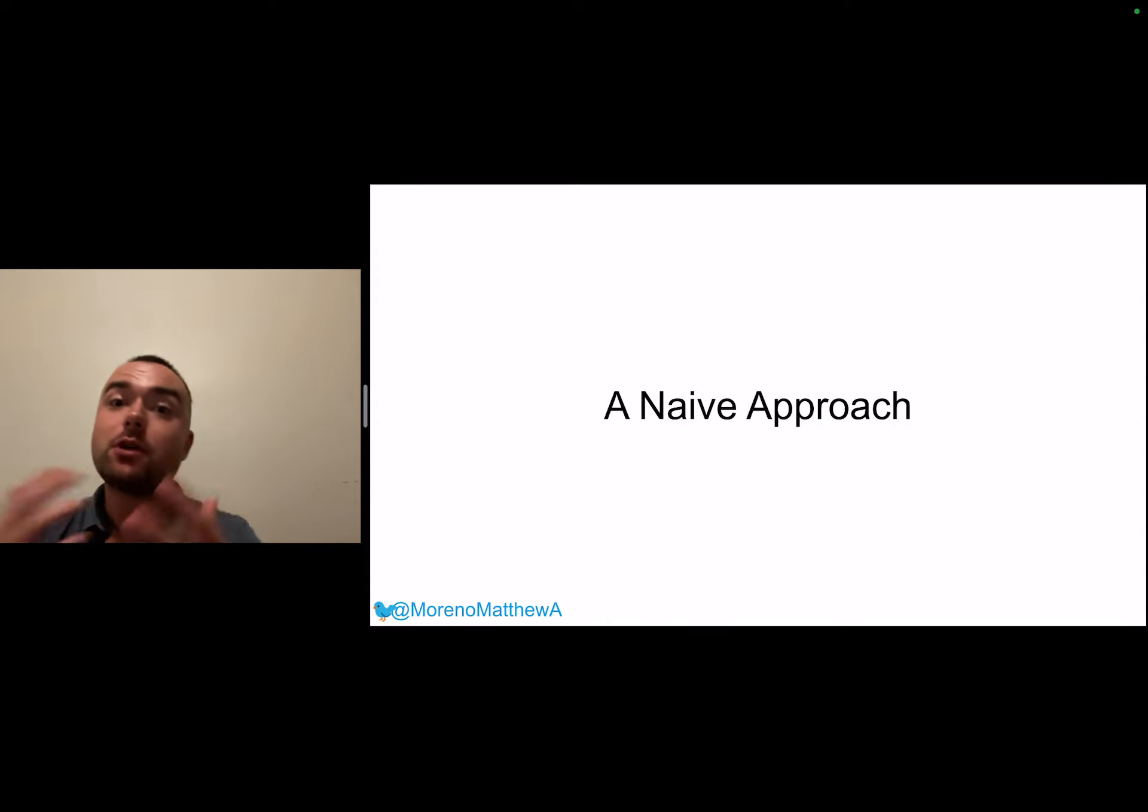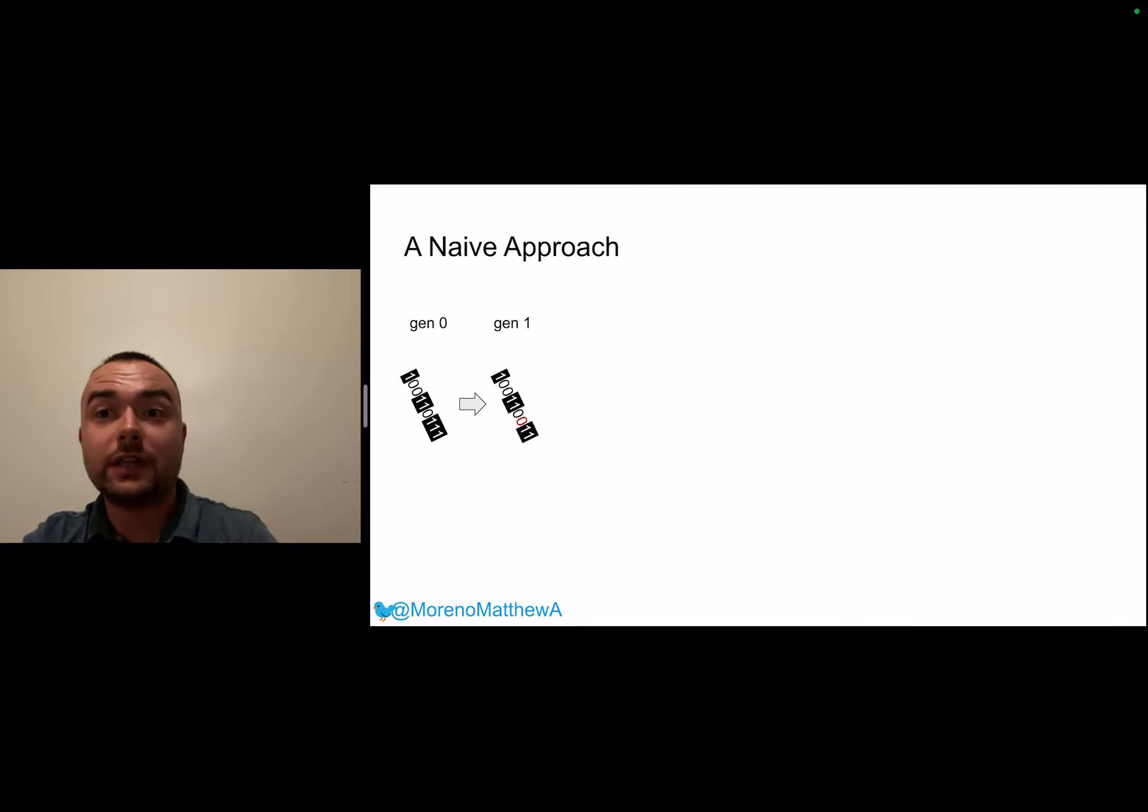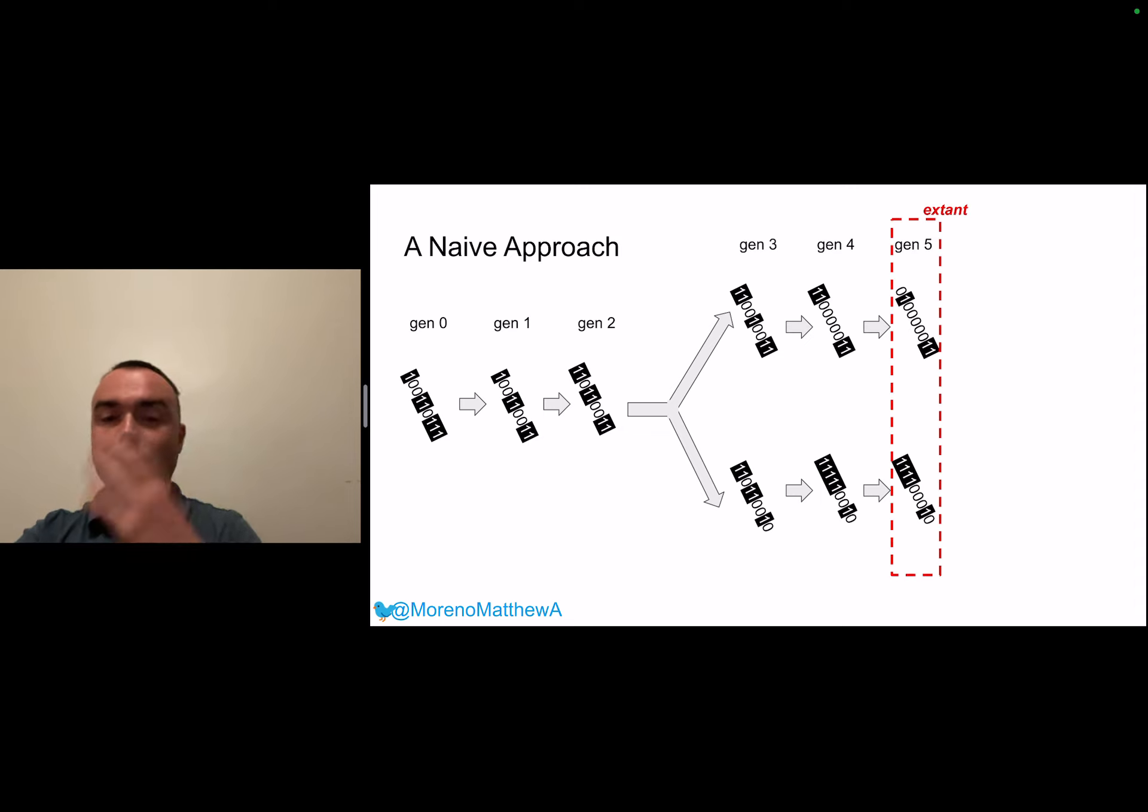To prime our thinking I'm going to start by sharing a naive approach we might think to solve this problem. We could imagine having a simple bit string genome that's just a set of ones and zeros and as generations elapse when the genome is inherited by an offspring we just apply with some probability some fraction of random bit flips, random mutations in the genome. This goes on and here we've got an event where the organism at generation two had two offspring. We apply a random mutation to both of those continuing until the simulation ends at generation five.